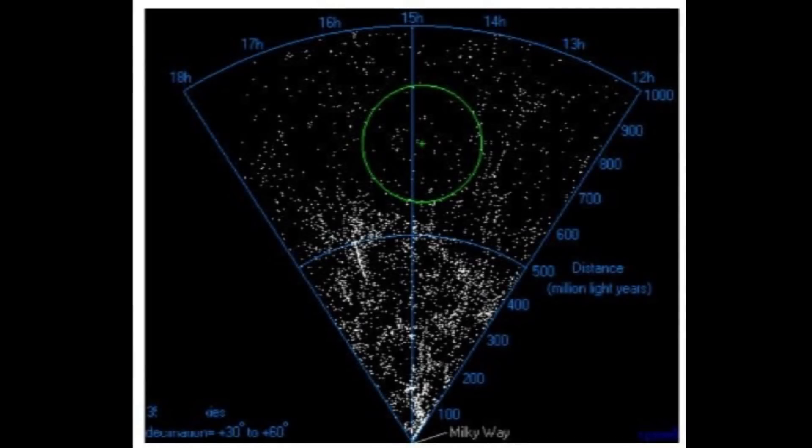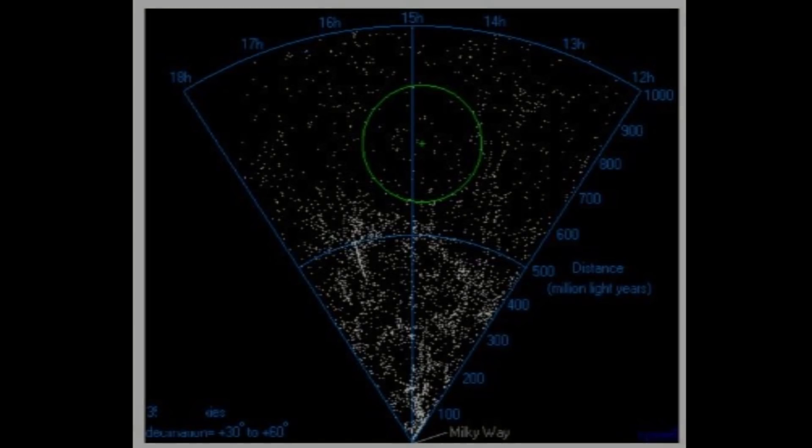Located near the Hercules supercluster is an area of space that can only be described as a void. Spanning an unfathomable 330 million light-years in diameter, there have only been 60 galaxies discovered inside of it. It is the emptiest region in the known universe.